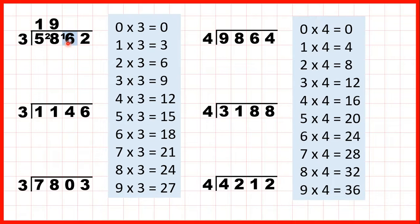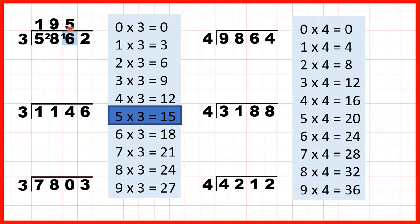So onto the next digit we have a 6 but there's a 1 in front of it, so we need to do 16 divided by 3. We're looking for a number in the 3 times table which is 16 or less. So 5 times 3 is 15 — that's the closest we can get to 16. Because 5 times 3 is 15, the 5 goes in our answer line, but we need 1 more to get to 16, so that 1 is our remainder. So 5 times 3 is 15 plus 1 gets us our 16.